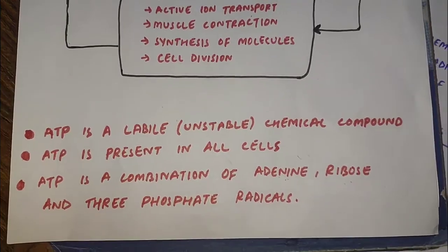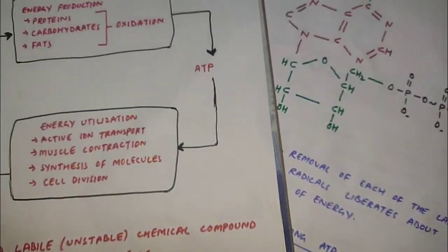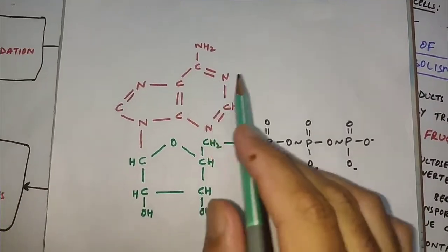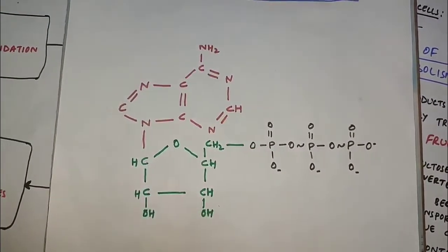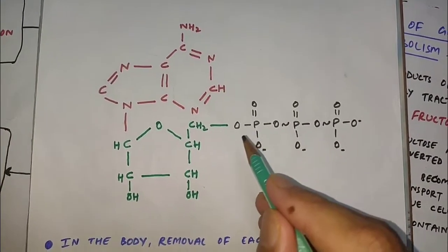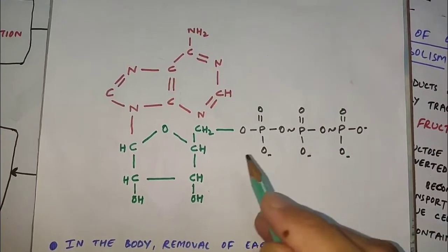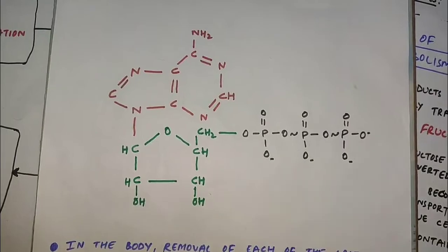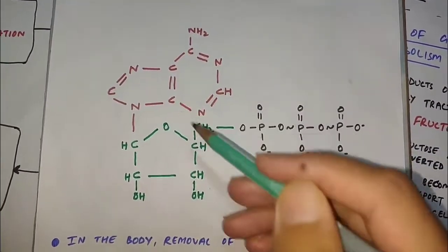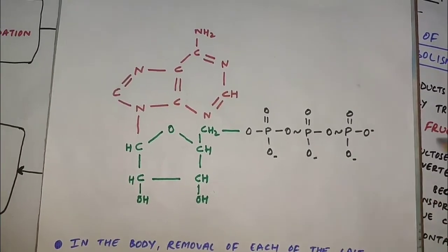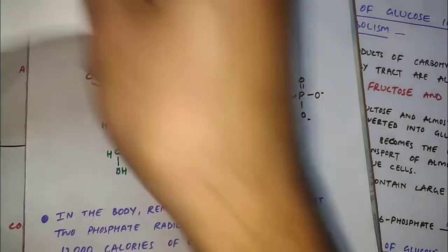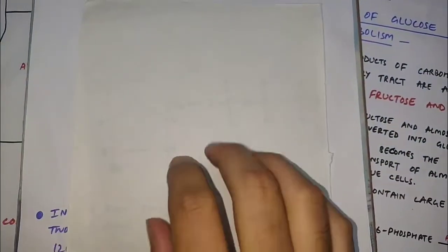Now let's look at the structure of adenosine triphosphate. The red colored portion is adenine, the green one is ribose sugar, and the black ones are the three phosphate radicals. Adenine plus ribose gives adenosine, and these are the three phosphate radicals. Now let's draw this structure within minutes.